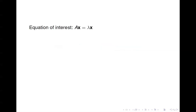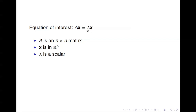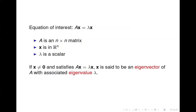Today our topic is eigenvalues and eigenvectors. The equation we're interested in when trying to find eigenvalues and eigenvectors is Ax equals lambda times x. Here, A is an n by n matrix, x is a vector in R^n, and lambda is a scalar. We're essentially asking: can you find x and lambda such that when you multiply A times x, you get the same result as simply scaling x by lambda? If x is not equal to zero and satisfies Ax equals lambda x, then it's said to be an eigenvector of A with associated eigenvalue lambda.